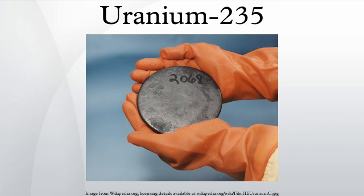Heavy water reactors and some graphite-moderated reactors can use unenriched uranium, but light water reactors must use low-enriched uranium because of light water's neutron absorption. Uranium enrichment removes some of the uranium-238 and increases the proportion of uranium-235.